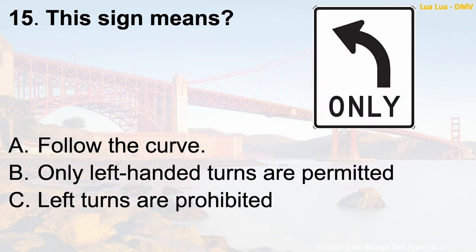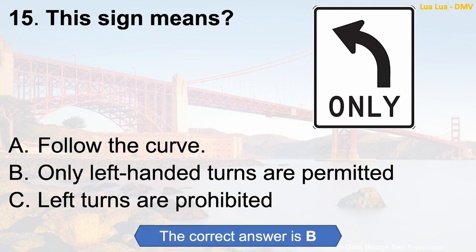Question 15: This sign means — A. Follow the curve. B. Only left-handed turns are permitted. C. Left turns are prohibited. The correct answer is B: Only left-handed turns are permitted.